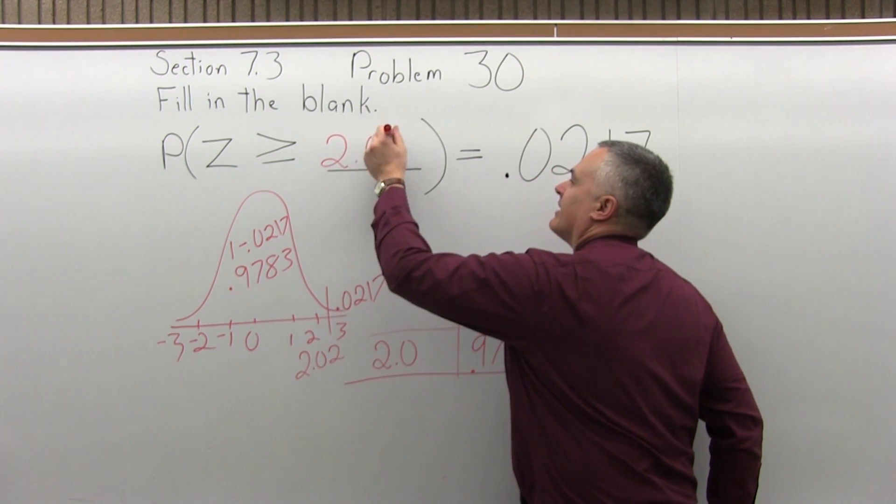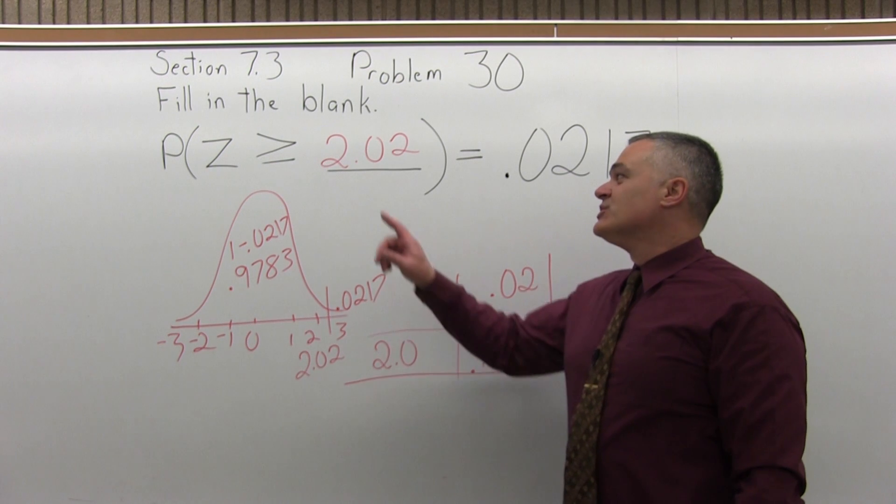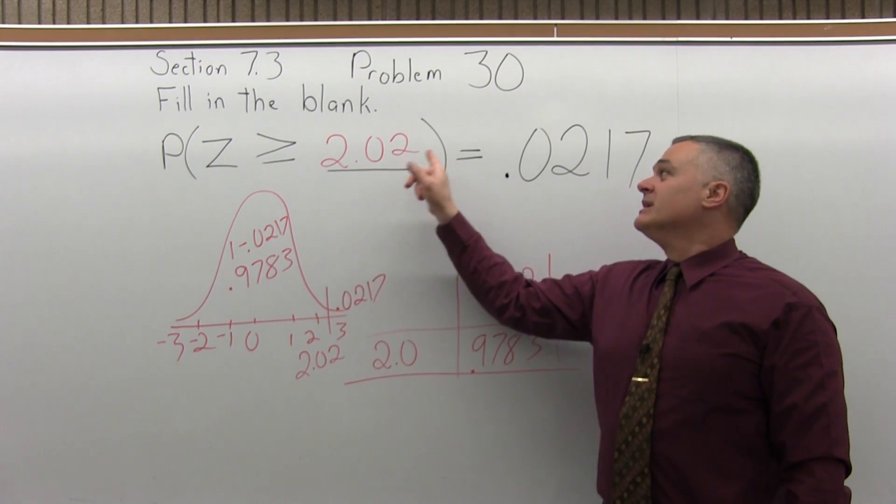That's what answers what's in the blank. The probability that Z is greater than or equal to 2.02 is equal to .0217.